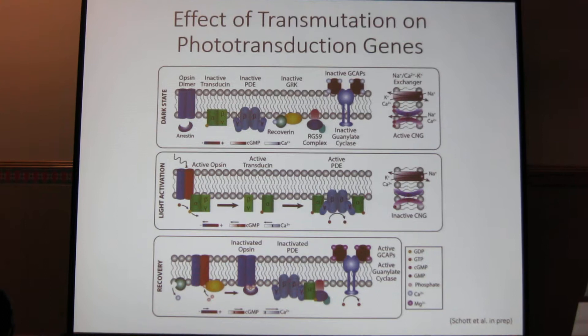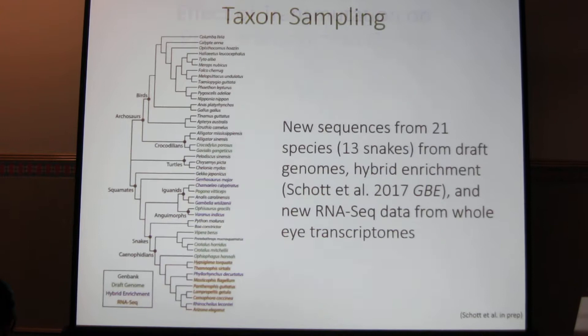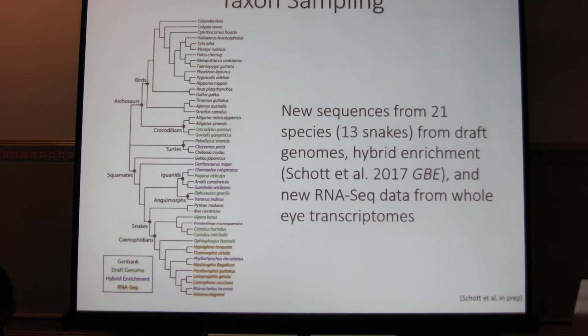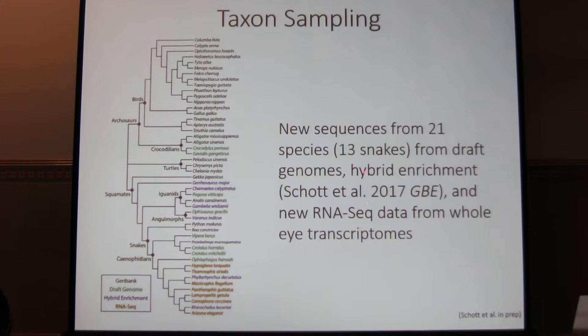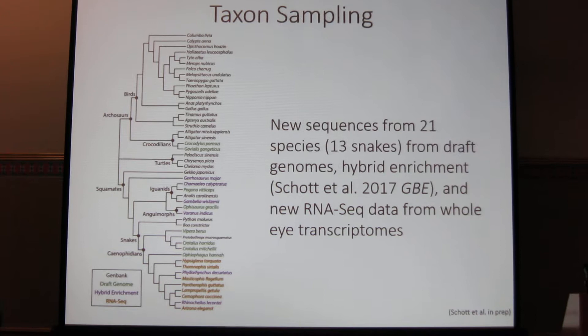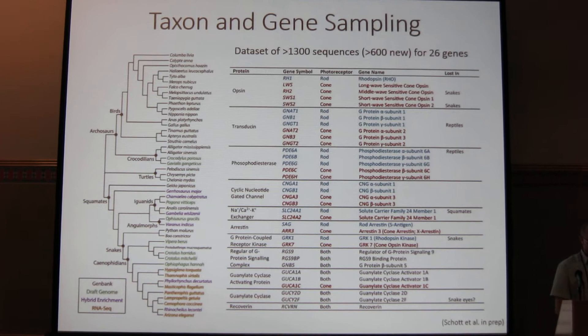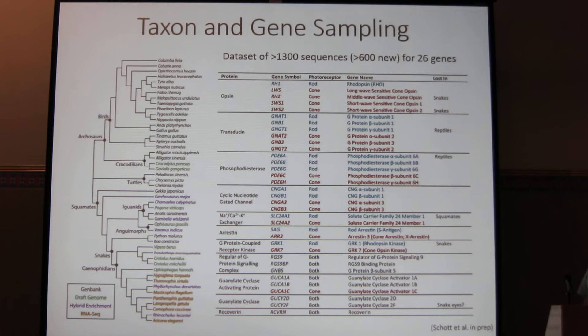I wanted to test what effect photoreceptor transmutation might be having on these genes. To do this, I needed to get some new sequences. We got new sequences from 21 different species of reptile, including 13 snakes, from different draft genomes as well as a hybrid enrichment experiment I performed previously and some new RNA-seq data from retinal transcriptomes from snakes. With this we were able to gather and annotate over 1,300 sequences, 600 of which were new, for 26 different phototransduction genes.